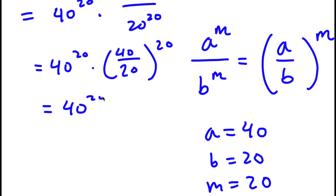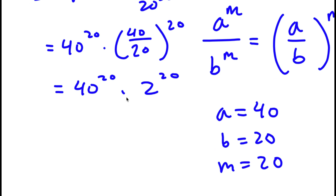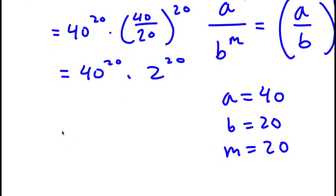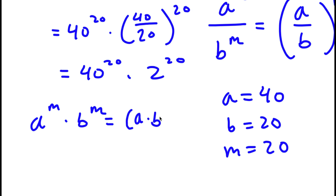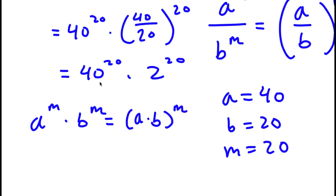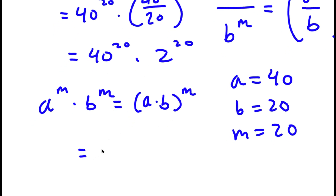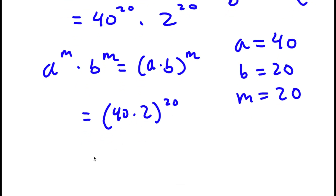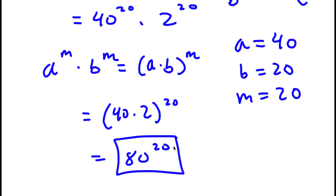So now I have 40 to the power of 20 times 2 to the power of 20. Remember, if I have something in the form a to the power of m times b to the power of m, this is equal to a times b to the power of m. So 40 to the power of 20 times 2 to the power of 20 equals 40 times 2 to the power of 20. 40 times 2 is 80, so my answer is 80 to the power of 20.